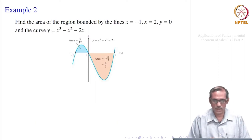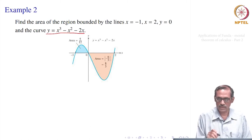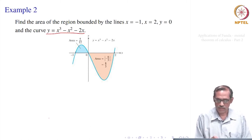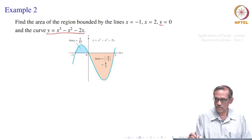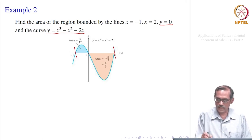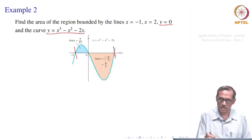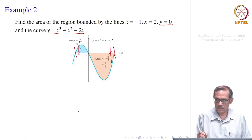In the second example, the curve is y = x³ - x² - 2x and we want the area of the region bounded by this curve, the x-axis y = 0, and the lines x = -1 and x = 2. These are the points where the curve crosses the x-axis, which makes it easier. Even if it did not cross, we would only integrate up to those points or consider additional area beyond x = 2.